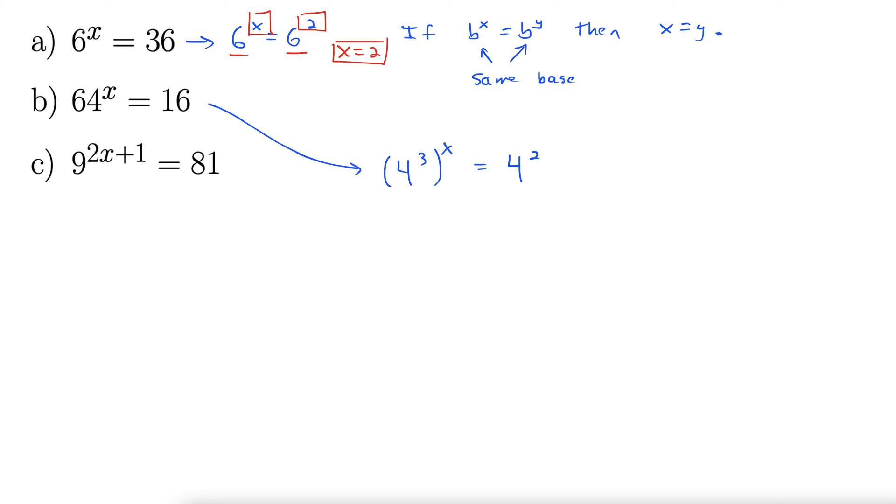Okay, we're getting closer. Let's go ahead and distribute this x through to the 3 there. So this gives us 4 to the 3x equals 4 squared. And there we have achieved what we wanted to. We have the same base.